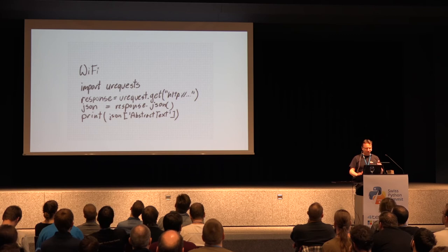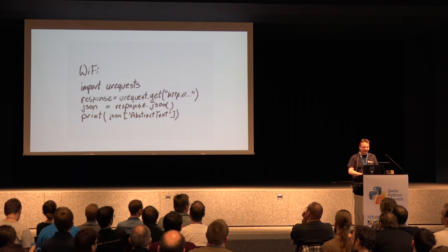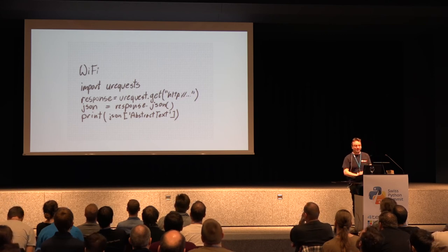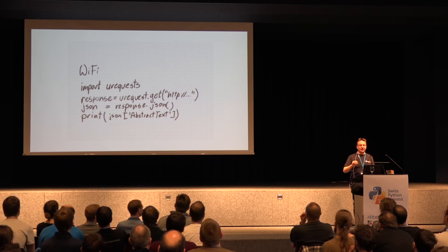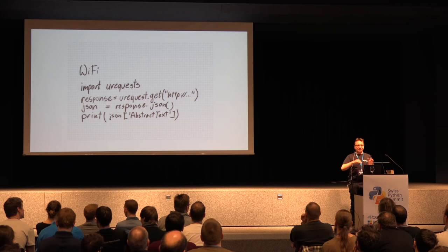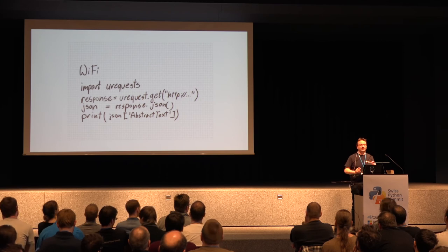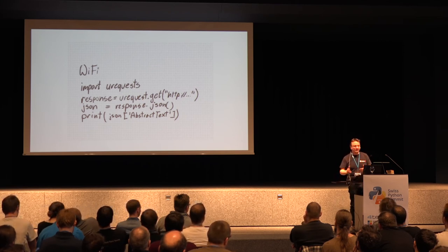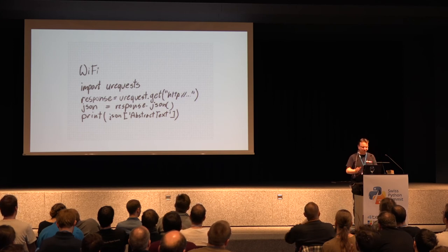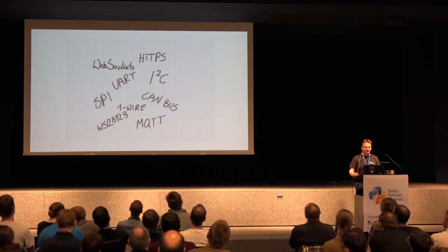It also has Wi-Fi, although I'm not going to show it because we can't connect here - it needs web sign-on. But there is a very convenient library called uRequest. Most simplified libraries for MicroPython have the 'u' prefix because they are simplified and don't have everything the original library has. They added the prefix so that if you implement the full library at some point, you won't have a name conflict and can use both.